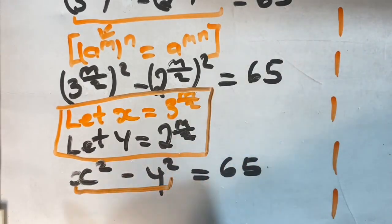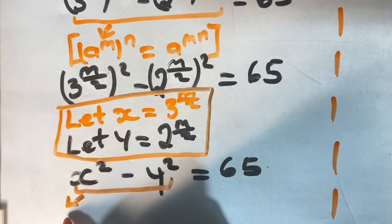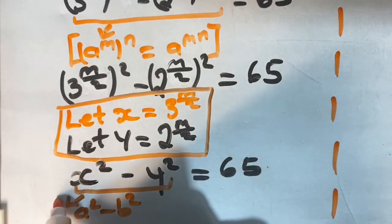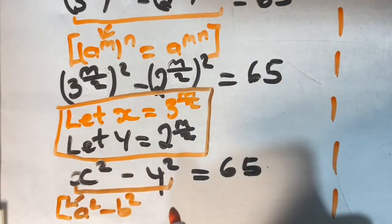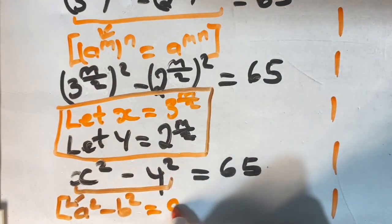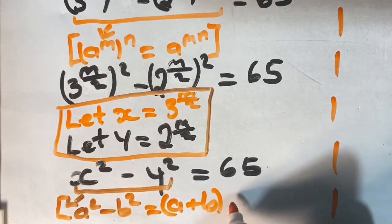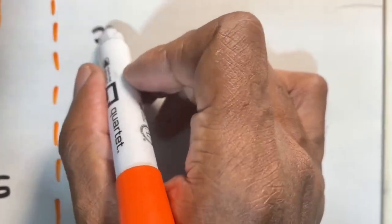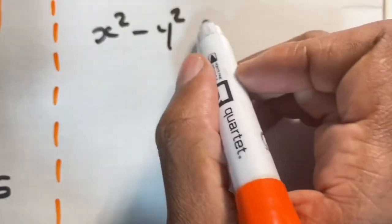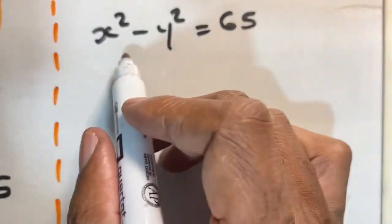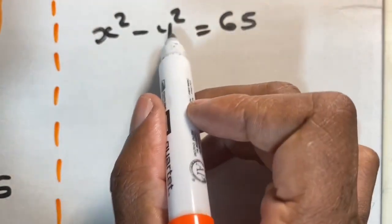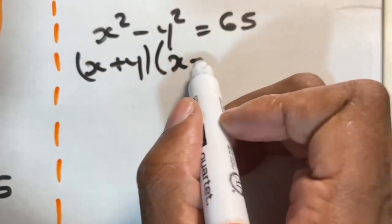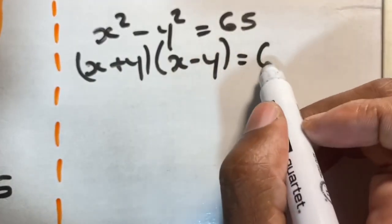If you look closely you'll see another index law coming out — what is called the difference of two squares. Our rule states that if we have a squared minus b squared, we can simplify this as a plus b in one bracket times another bracket where we have a minus b. We are going to apply that rule right here, so we have x plus y in brackets times x minus y in brackets, and that equals 65.